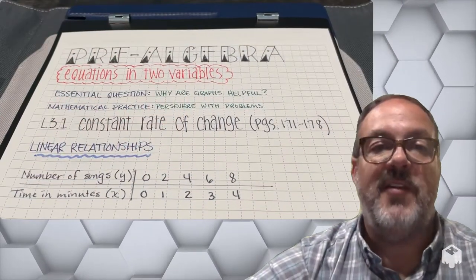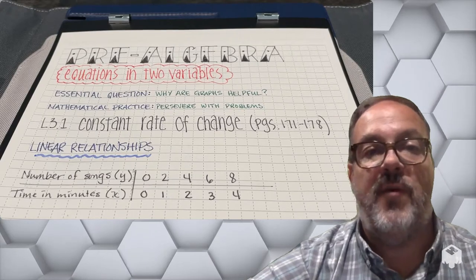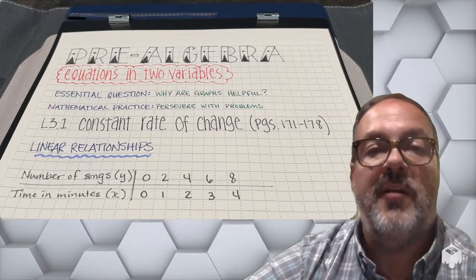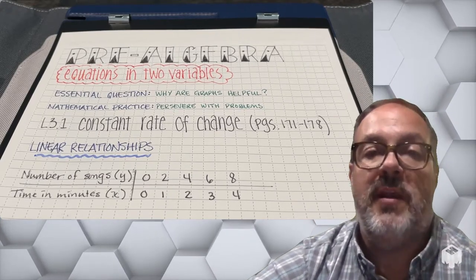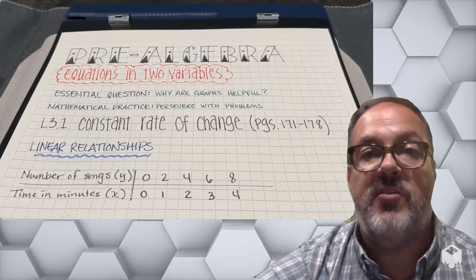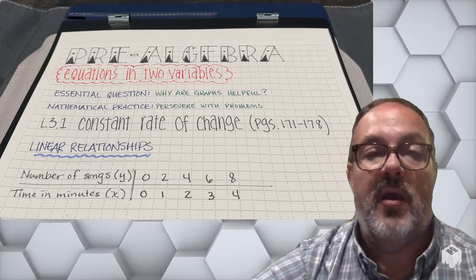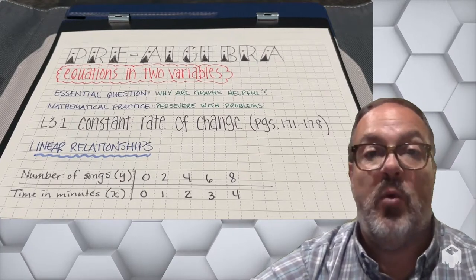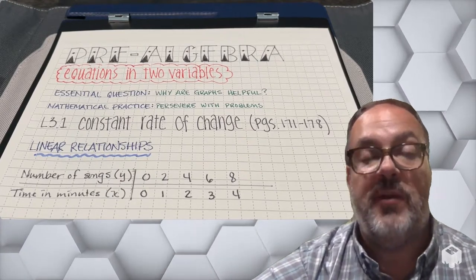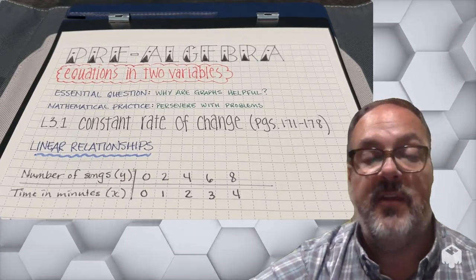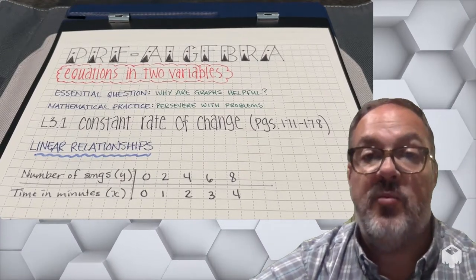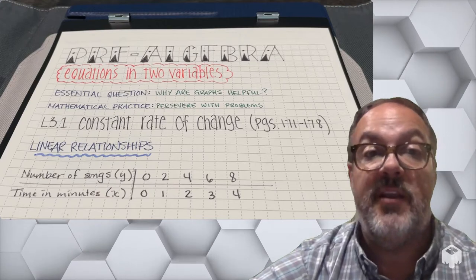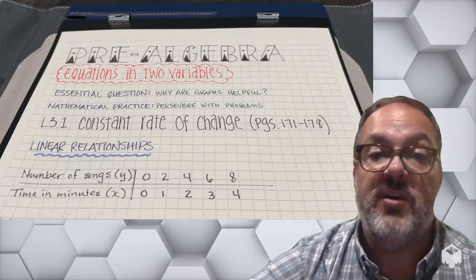In this lesson we're going to focus on the constant rate of change and we'll be working on pages 171 to 178. Our focus is going to be on linear relationships.